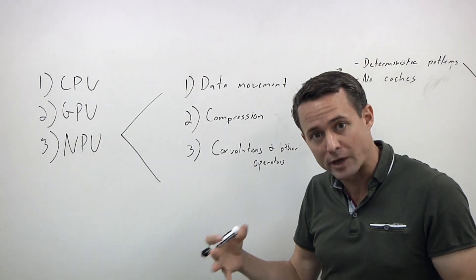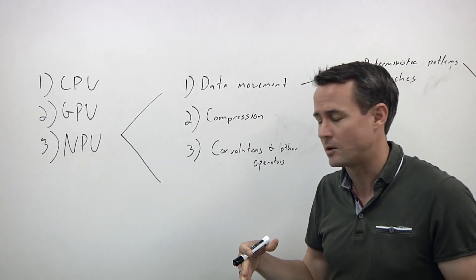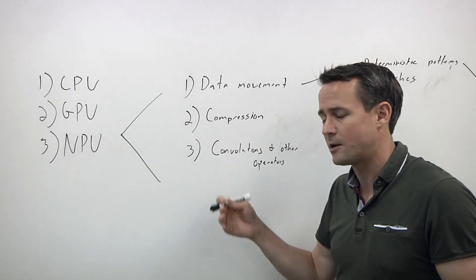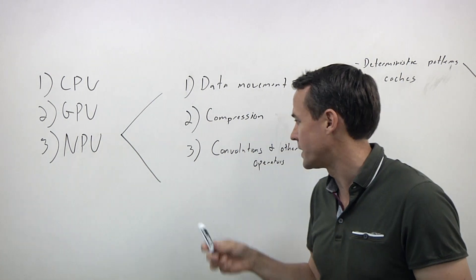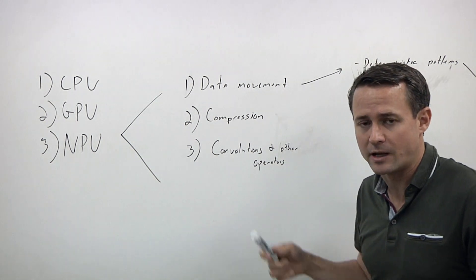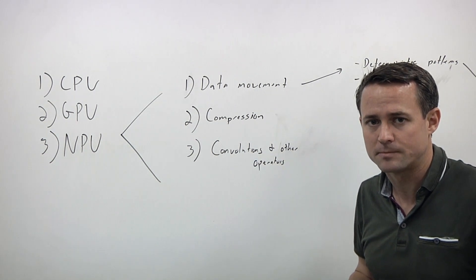You need to think about compression. Again, that's tied to that data movement argument. And then you need to think about how you accelerate the types of operations seen in machine learning inference like convolutions and non-convolution operators.